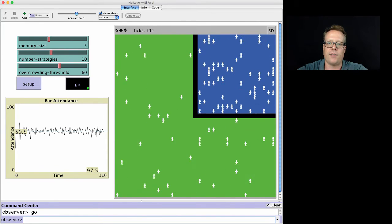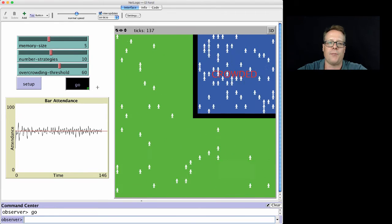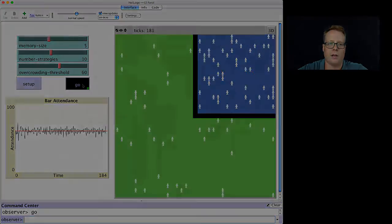Indicating that even with these very simple rules, agents can achieve a somewhat, quote unquote, socially optimal behavior in terms of their use of the bar.